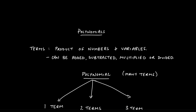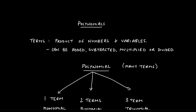If I have 3x times 4y, that's all one term because everything is being multiplied: 3 and x are being multiplied, 4 and y are being multiplied, and then 3x and 4y are being multiplied. So what can we do with terms? In mathematics we can add them, subtract them, multiply them, or divide them.